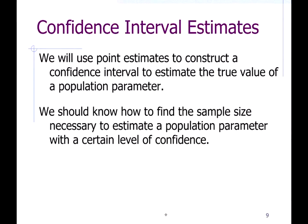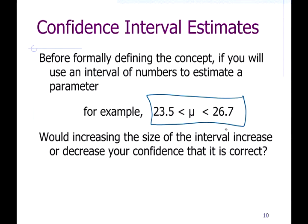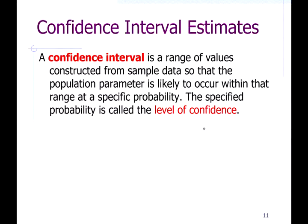A point estimate is a single number like x-bar equals 2.6, while a confidence interval estimate will look something like: 'our estimate of the population mean is somewhere between 23.5 and 26.7.' In this video I'm going to talk about estimating the population proportion, and in my next video I'll talk about estimating the population mean. The process is going to be very similar.